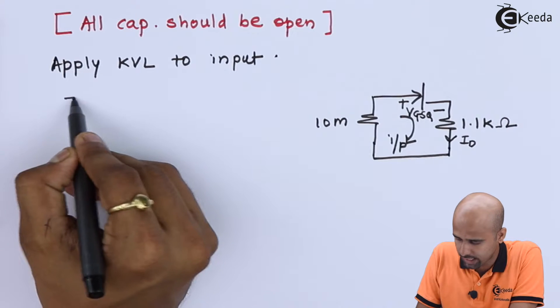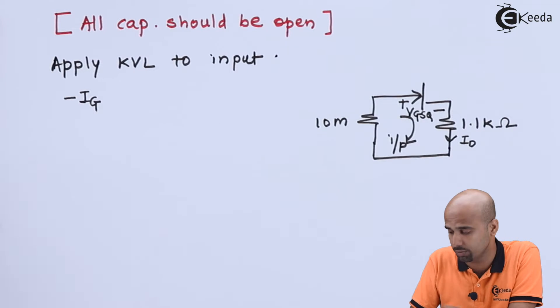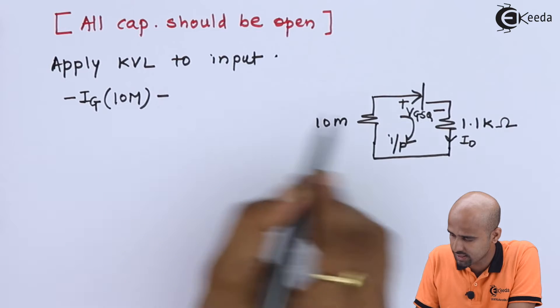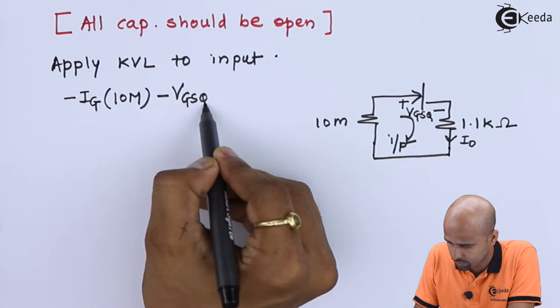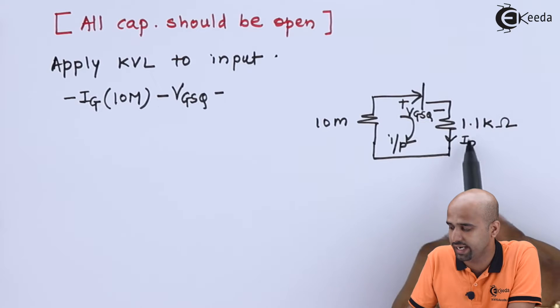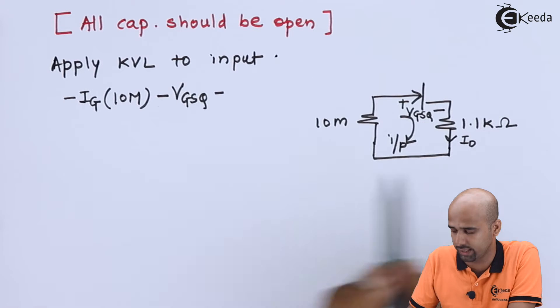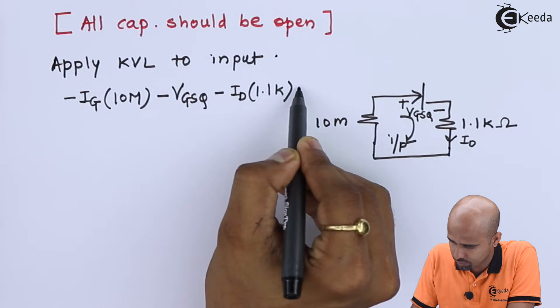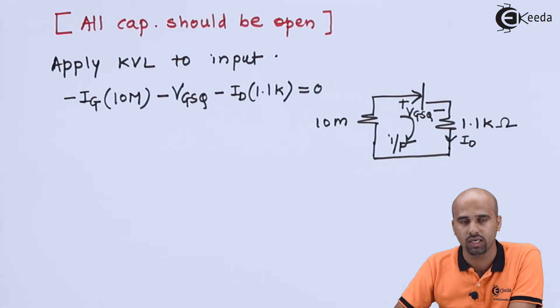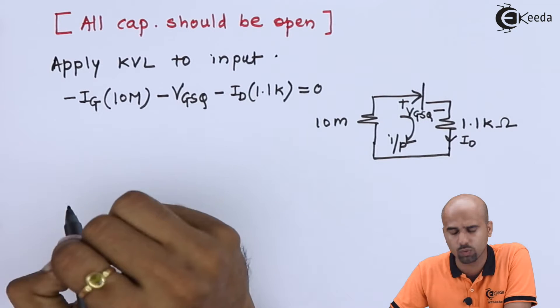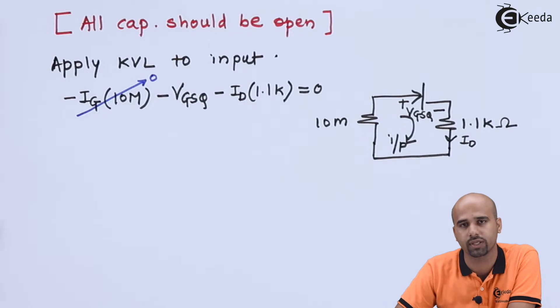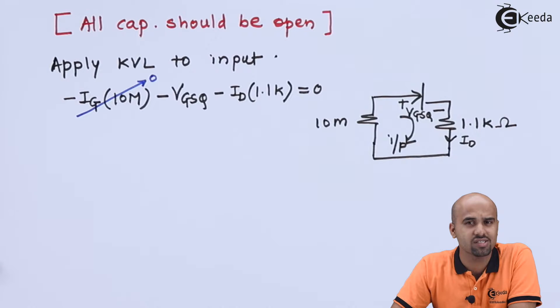So I will just apply that IG, that is gate current, multiplied by this 10 megaohm minus VGSQ minus this ID multiplied by 1.1k is equal to 0. As I mentioned that IG is equal to 0, so I can say that this will become 0. Complete thing. So no matter how much resistance at the gate side I have applied, whether it is of 1 mega, 2 mega, 2.2 mega, IG is equal to 0.